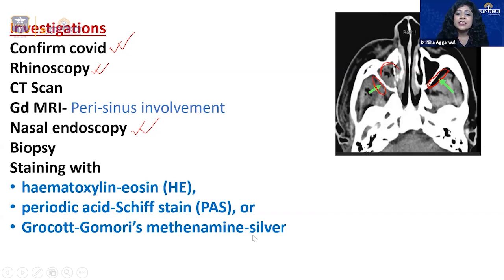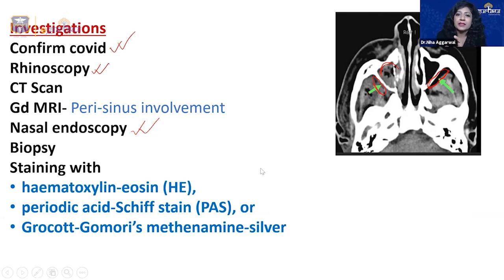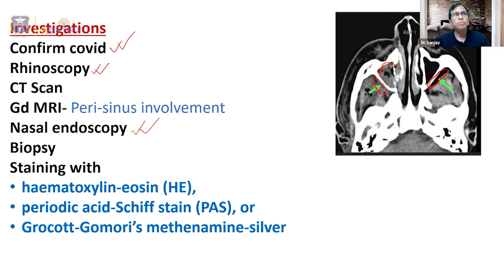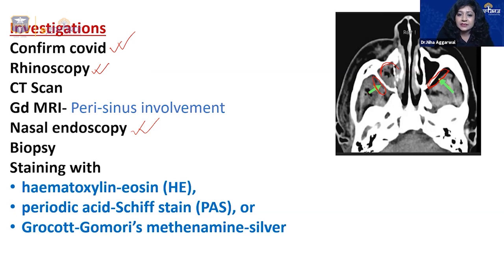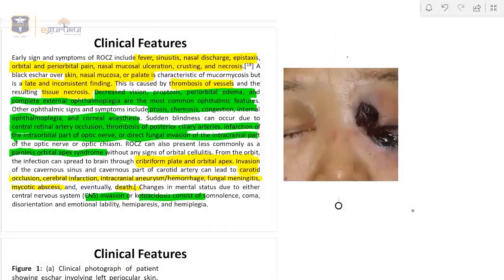For MCQ purposes: which sinus is most commonly involved? The two most important sinuses are the maxillary sinus and the ethmoidal sinus. In order of frequency: the maxillary sinus is most common, followed by the ethmoid sinus.